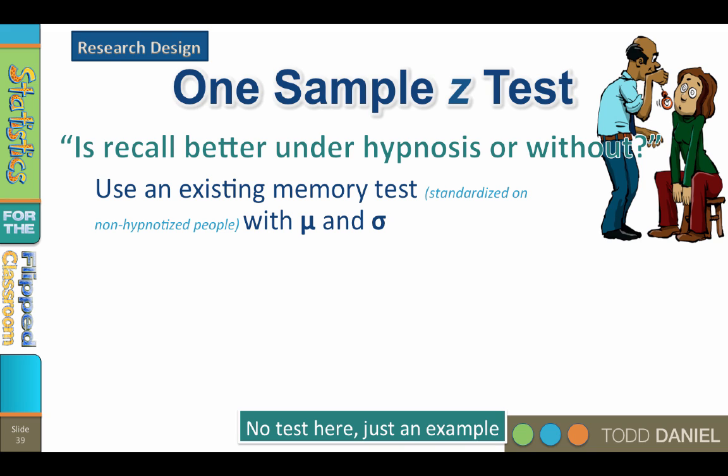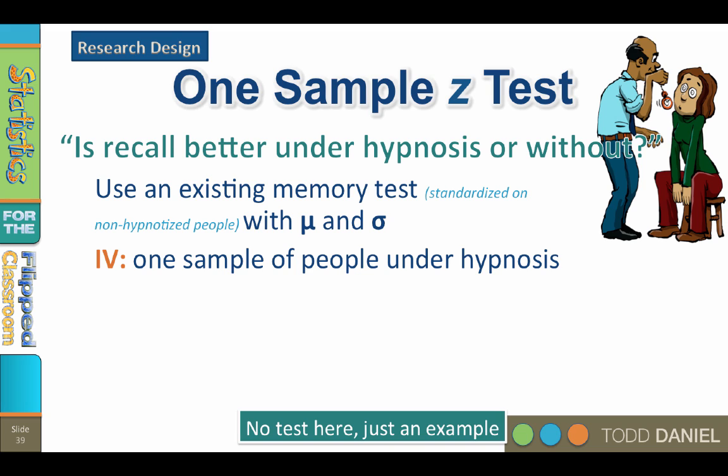This memory test has a mean and a standard deviation, and those values apply to the population — all human beings will score an average on this test with a standard deviation. This is not realistic because not all human beings in the world have taken this test, but we will revisit this idea later. We never actually know the standard deviation of the population. The independent variable would be our one sample of people whom we hypnotized and then give the memory test.